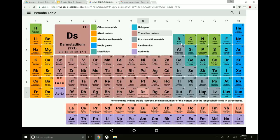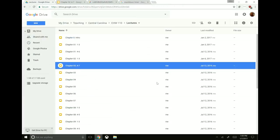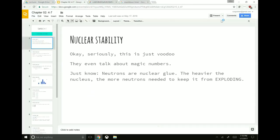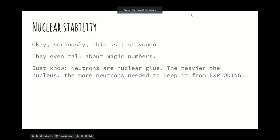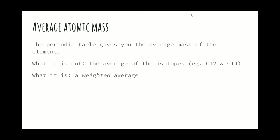Then you pop down here to gold. Gold has 79 protons, but it has an atomic mass of about 197, meaning it has about 118 neutrons. So the heavier things get, the more neutrons they need to hold the thing together just to keep it from exploding. So that's what you need to take away from nuclear stability.